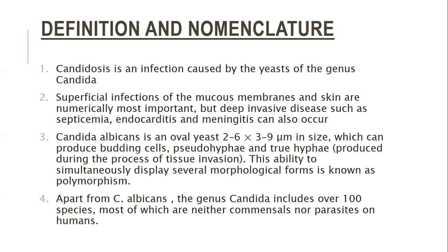Candida albicans is an oval yeast, two to six by three to nine micrometers in size, and produces budding cells, pseudohyphae, and true hyphae, which are produced during the process of tissue invasion. This ability to spontaneously display several morphological forms is called polymorphism. Apart from Candida albicans, the genus Candida includes over 100 species, most of which are neither commensals nor parasites on humans. The most important of the yeasts is Candida albicans.